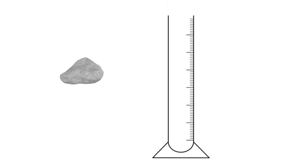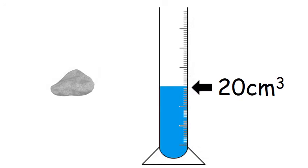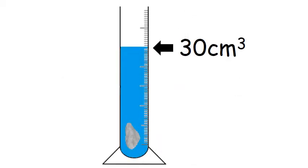To find the volume of a stone, we need the stone and a measuring cylinder or container with volume markings. The first step is to fill the measuring cylinder with water up to a certain level and record this value — for example, 20 cm³. Note that to keep the explanation simple we represent the water level as a straight line, but keep the meniscus in mind. Next, we gently lower the stone inside the measuring cylinder and the water level increases — we record the new value, which in this case is 30 cm³.